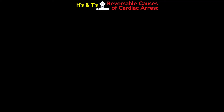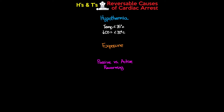The last H is hypothermia. We consider hypothermia at a temperature less than 35°C, but once temperature drops below 30°C we really see an impact on cardiac output. Hypothermia is typically the result of some sort of exposure event, so it's often not a cause we'll see in the ICU. Treatment is passive or active rewarming — things like blankets, a bear hugger, or warm fluids.